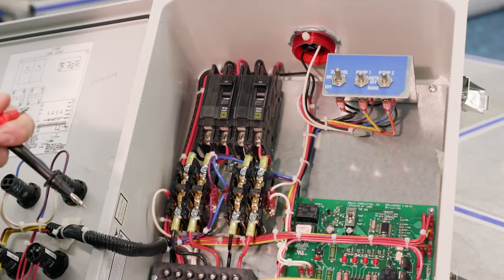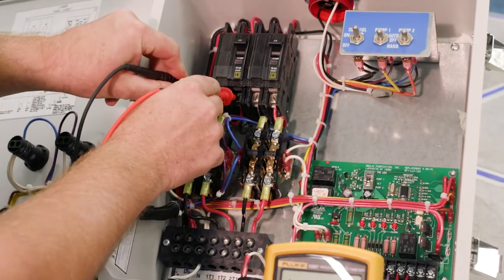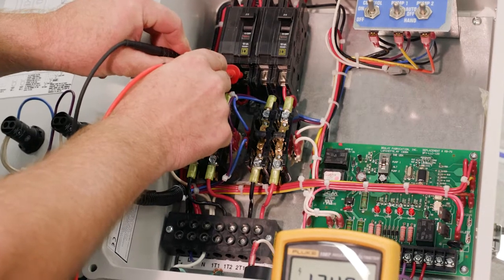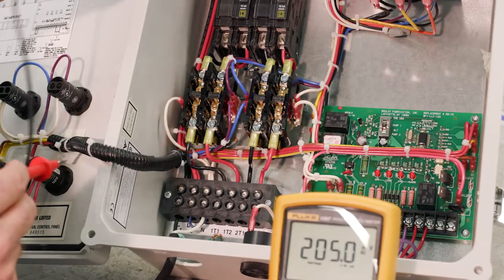So next is the power going through the circuit breaker, so we're just going to follow that power down. And again, we've got 124 volts again. And you'd want to check both sides, we're just going to do one side.